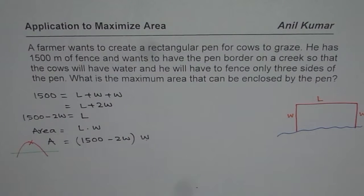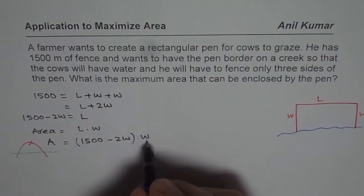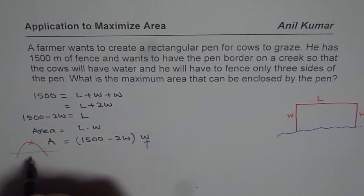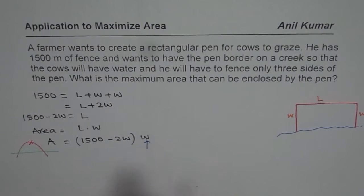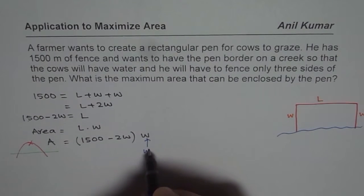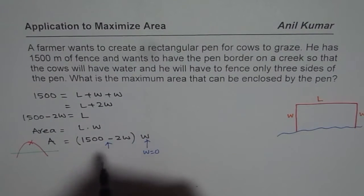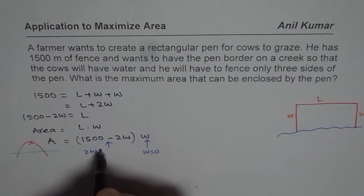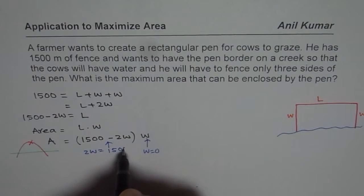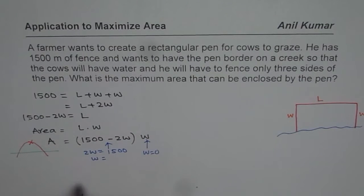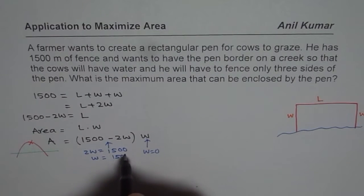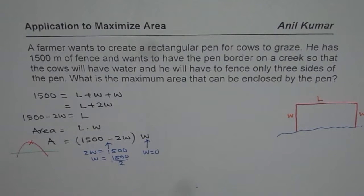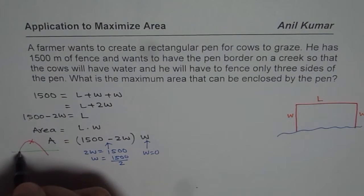As we can see, one of the x-intercepts will be at W equals to 0. So let us assume W to be 0 is 1 x-intercept. So that is W equals to 0. The other will be because of this factor. And that is when 2W equals to 1,500 or W is equals to 1,500 divided by 2. That is 750.